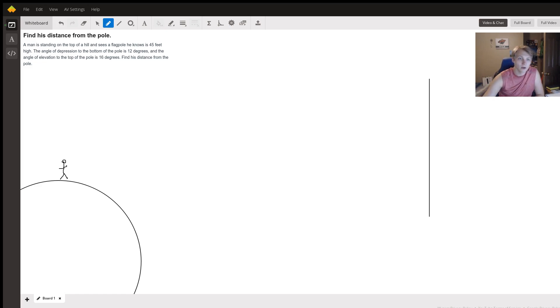So what do we know? Well, we know that the flagpole is 45 feet high. We're trying to find the distance to the flagpole, and we'll call that x. That's what we're trying to solve for.